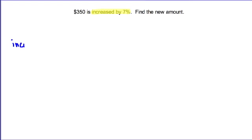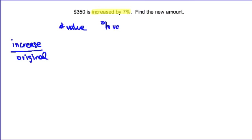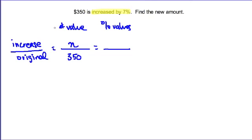The first technique is to set up a proportion again. In this case we have an increase and an original amount, with number values and percent values. Do I know the value of the increase? No — so that's N. Do I know the original amount? Yes: 350. Do I know the percent of the increase? Yes: seven. And the original percent is always 100.